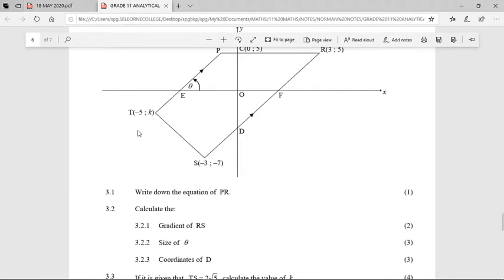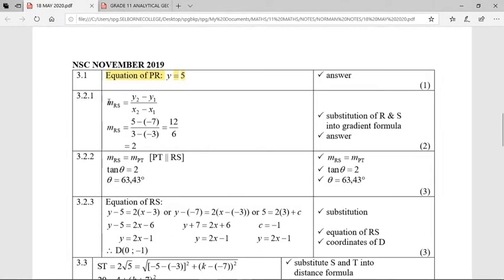Moving to 3.2.1, calculate the gradient RS. So R down to S there, we need to work out the gradient. We can already see just by looking that the gradient is going to be positive. Change in y over change in x. How many units does the y change? From 5 down to negative 7 is a change of 12. How many units does the x change? Change 3 to negative 3 is a change of 6. So 12 divided by 6 is a gradient of 2.